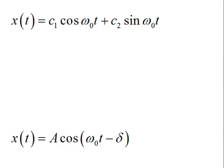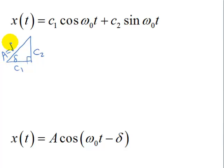We could do that in terms of just sine or just cosine. We're going to do it in terms of just cosine. How we're going to do that is draw a right triangle. We'll label the sides C1 and C2 and this angle delta. That means our hypotenuse, we're going to call that A, equals the square root of C1 squared plus C2 squared.